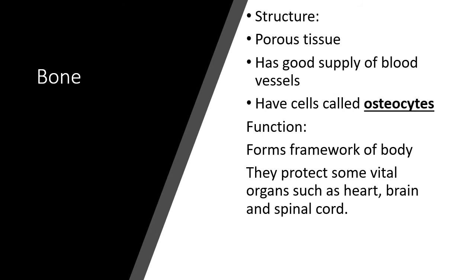The next important skeletal tissue is bone. Bones make up the internal body skeleton. Bone is very hard and porous tissue with a good supply of nerves and blood vessels. It also has a matrix, but the cells are known as osteocytes, and they contain a lot of calcium and magnesium, which provides hardness to the bone. The matrix in bone tissue is arranged in concentric circles around a central canal known as the Haversian canal. The osteocytes are present in fluid-filled spaces called lacunae, and all lacunae communicate with each other through a network of fine canals called canaliculi.